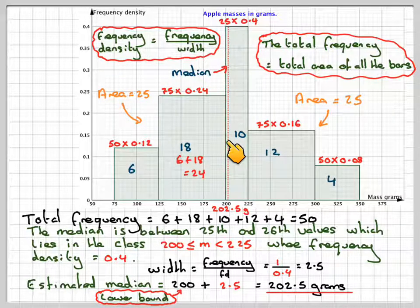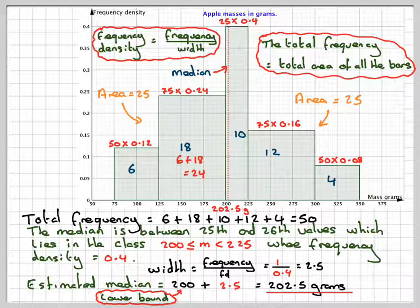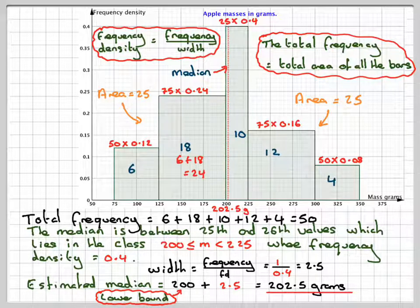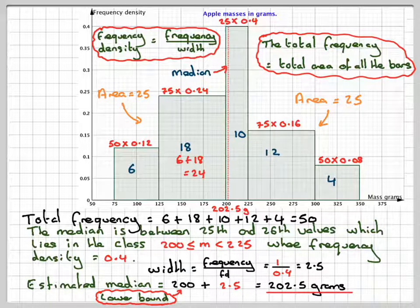This little bit here, it represents 1 plus 18 plus 6, which is 25. So the median is the one where it's going to split the area underneath the graph into two equal parts. In this case, we had 50, so it would be 25.